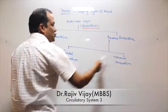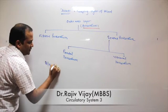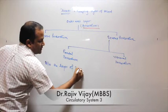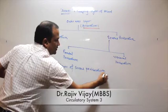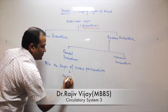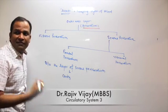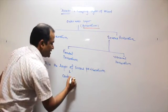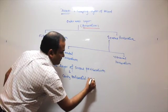And in between these two layers — between the layers of serous pericardium — a cavity is present. And that cavity is known as the pericardial cavity.